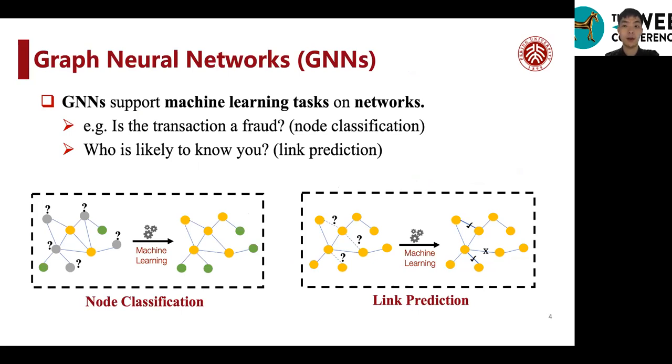For example, if we want to identify fraud transactions on transaction graphs, then we need to carry out node classification, where each node is a transaction or user.